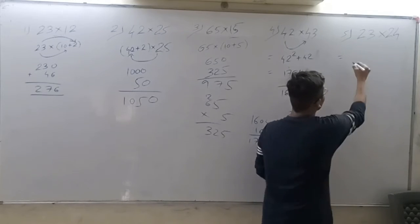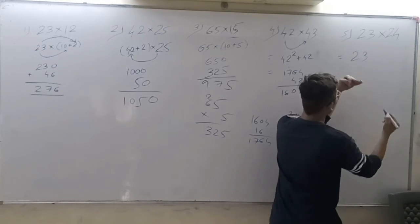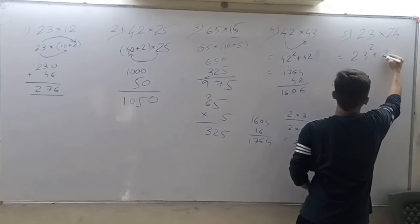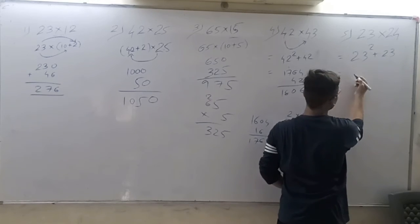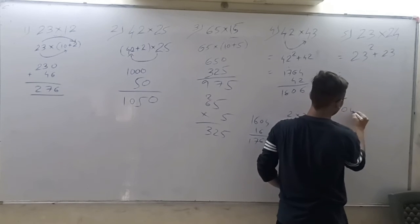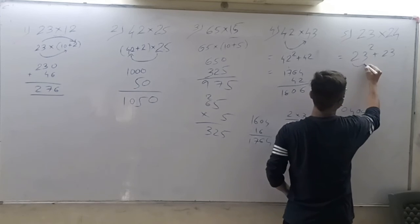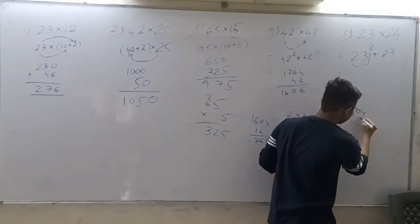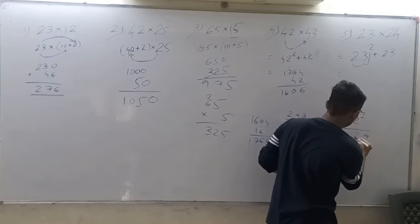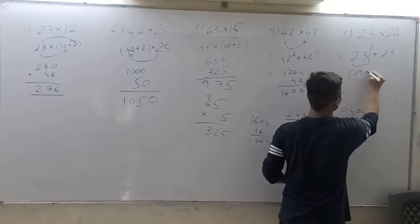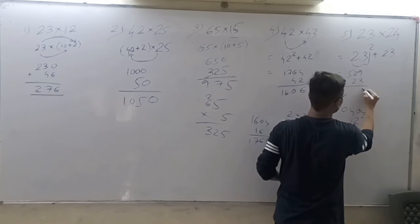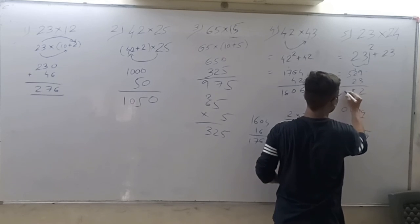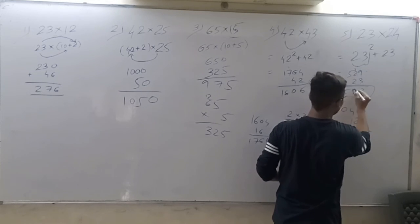23 into 24. Same trick. Whichever is small, we'll square it and plus add that number. 23 square, what will it be? 400 plus 9. 2 times 3 is 6, double that is 12. Working from the back, skipping one, we get 529. Plus 23 equals 552. This will be our answer.